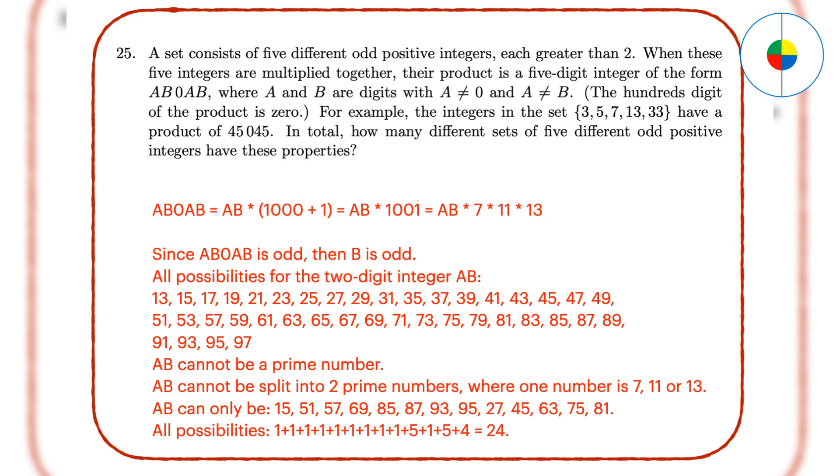In the end, AB can only be one of the 13 numbers. For each case, you can figure out the total combinations for the five numbers. For example, when AB is 81, the combinations can be 3, 27, 7, 11, 13. Or 3, 9, 21, 11, 13. Or 3, 9, 7, 33, 13. Or 3, 9, 7, 11, 39. You can calculate all the possibilities of those five numbers. The answer is 24.